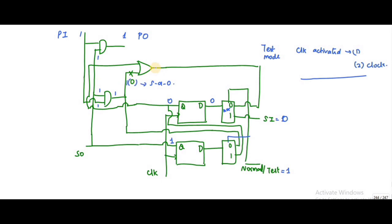To propagate the stuck-at fault to the output, I need one or zero at that node. If this node is zero, the other input is also zero — that is correct. This gives one at that point. So I have a one-zero pattern stored in the scan path and one at this output value.